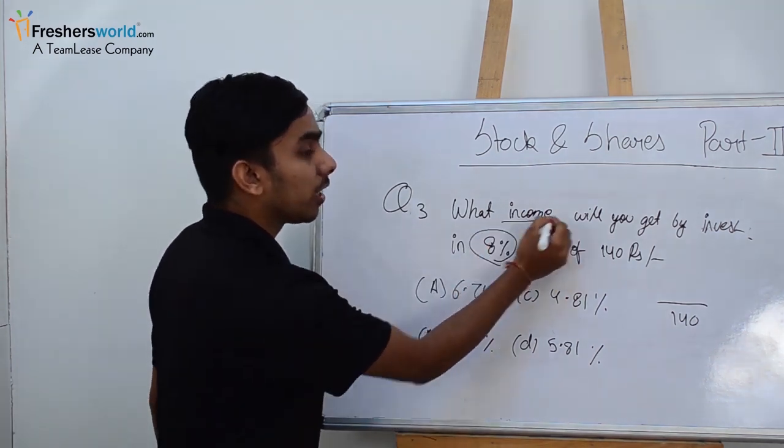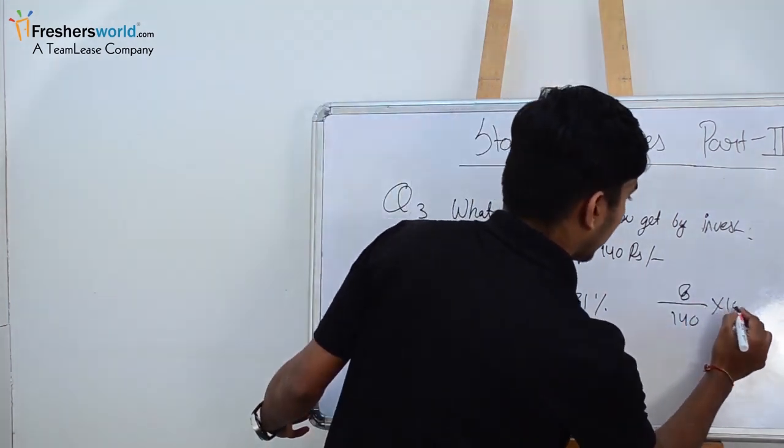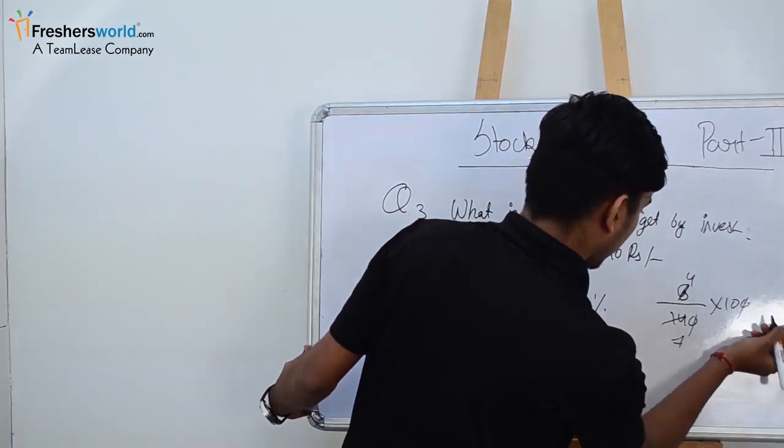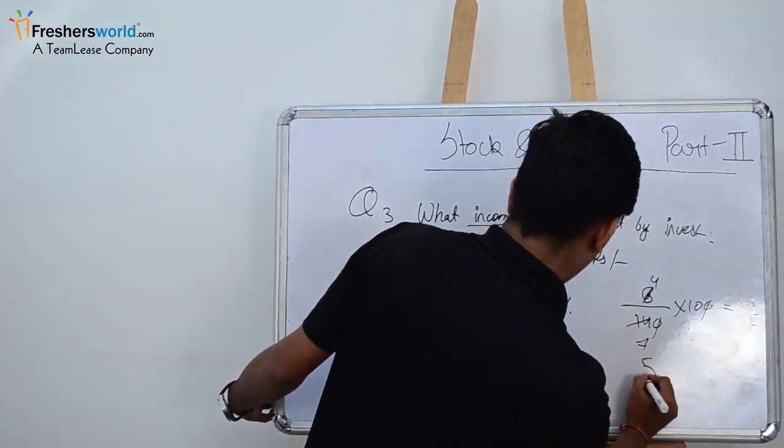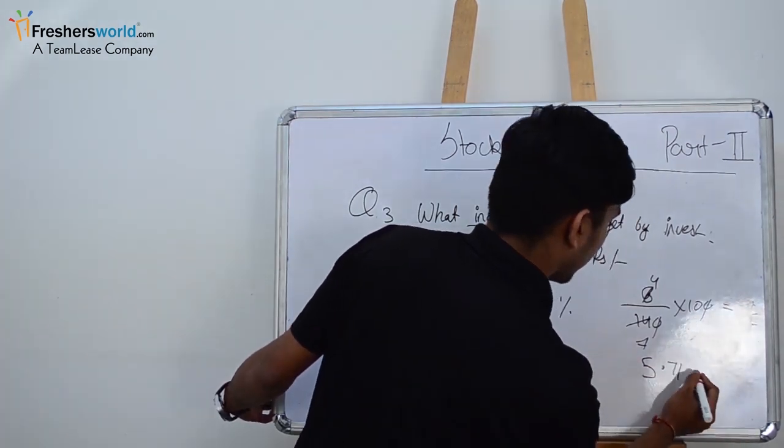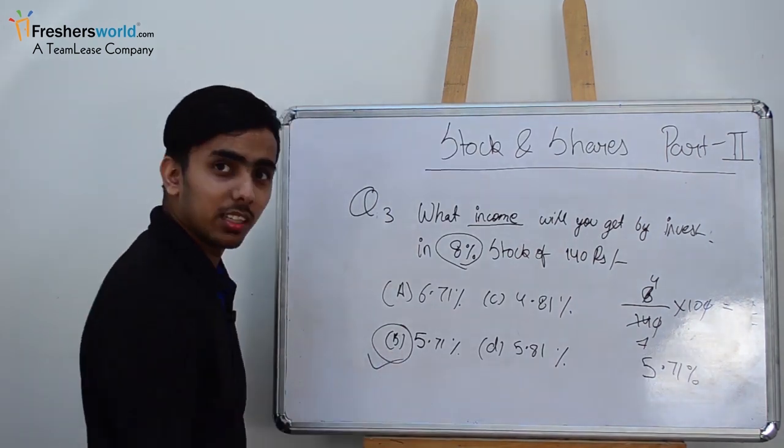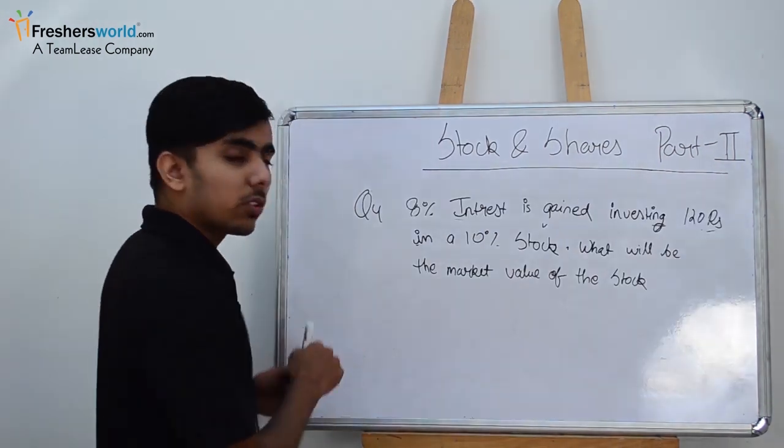So it will be your income. So 8 percent into 140 divided by... 40 by 7 equals 5.71 percent. So option B is the right answer.